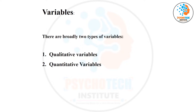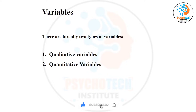They just give you any variable and ask: is this a qualitative variable or a quantitative variable? Or they will ask you to choose the qualitative or quantitative variable from the options — very simple question. But it's simple only if you know it. If you know 2 plus 2 is 4, very simple. But if you don't know how to add, it's very difficult.